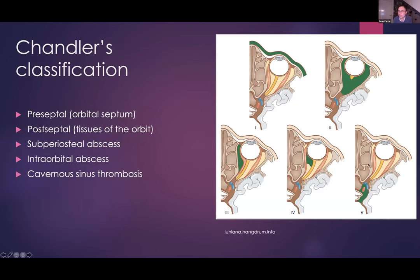One could argue that cavernous sinus thrombosis, this fifth example, is actually an intracranial problem. The main issue with Chandler's classification is that these episodes of differing inflammation don't happen independently and sequentially. You can have the onset of an orbital subperiosteal abscess before you have any changes of cellulitis or superficial inflammation, so they don't necessarily follow this nice sequential suggestion. Don't be drawn into the security you may get from suspecting that only one type of inflammation can be present at any one time.